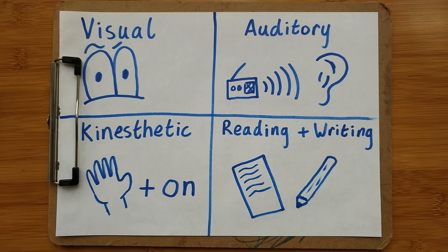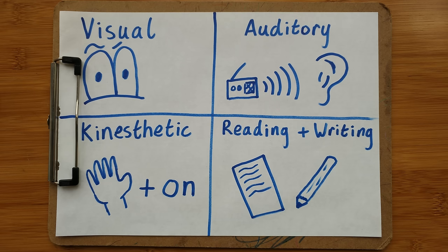Everybody learns in different ways. Some people learn better in groups and some people learn better by themselves. Some people can read books and remember all the facts, and some people can't. Have you ever sat looking at a page in a book, staring at the words, but none of the information is going into your head? That might be because you're not suited to that learning style.